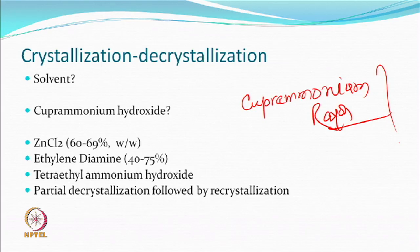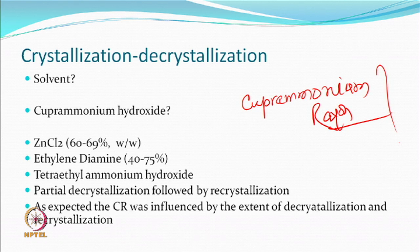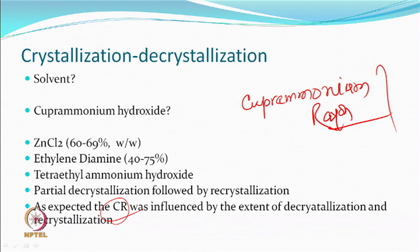The crimp rigidity of the textured yarn was influenced by the extent of decrystallization and recrystallization. The process optimization for the same solvents with viscose versus cotton will be different, because cotton is more crystalline compared to viscose — the difference is almost 20 percent or more — so optimized conditions, particularly time, would be different. Ethylenediamine is an organic system, and triethylammonium hydroxide is an ammonium compound with four linkages, giving it a positive charge.